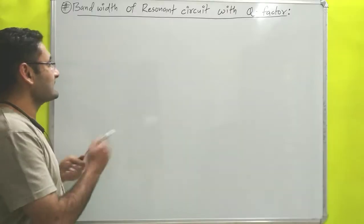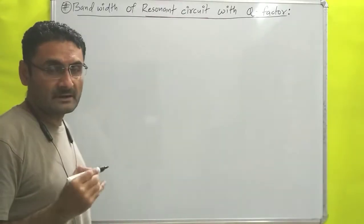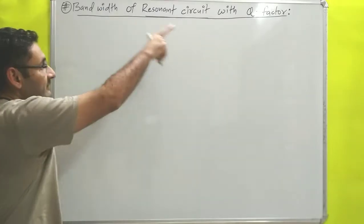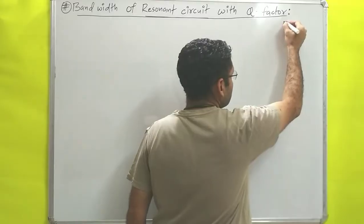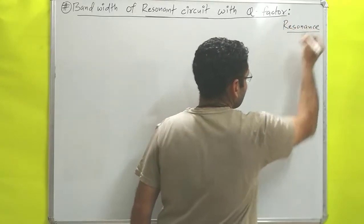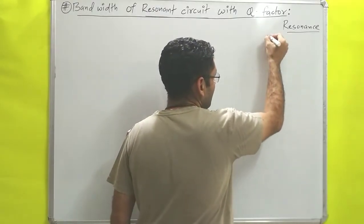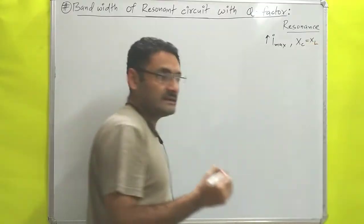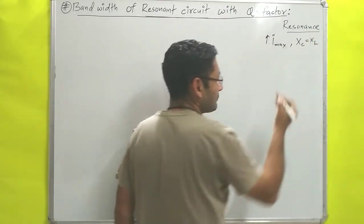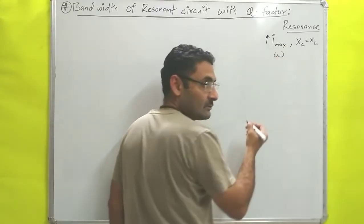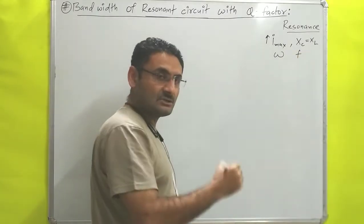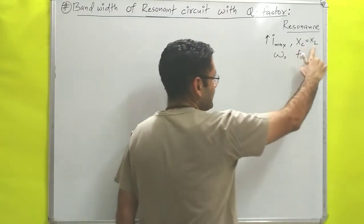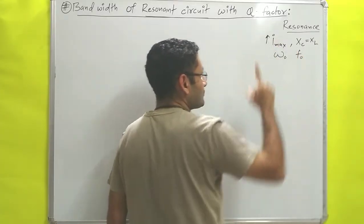In the previous video we have already discussed this type of resonance circuit — the RLC resonance circuit. We will get some idea very quickly and then move on with bandwidth and Q factor. Resonance means maximum current will flow, and the condition was that the value of XC and XL must be equal. By changing the angular frequency, we can make XC and XL equal. At omega naught — the resonant frequency — XL and XC become the same, so maximum current flows through the circuit and resonance occurs.